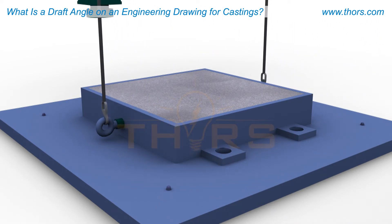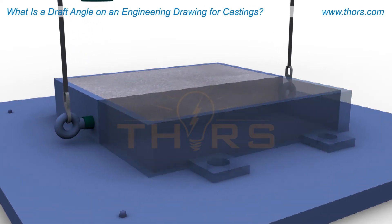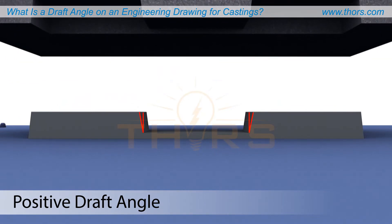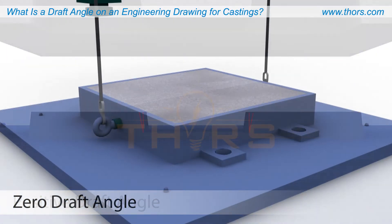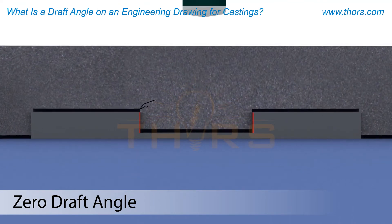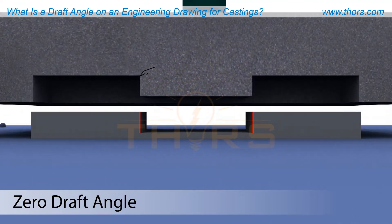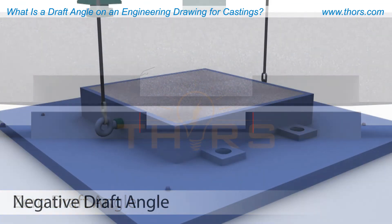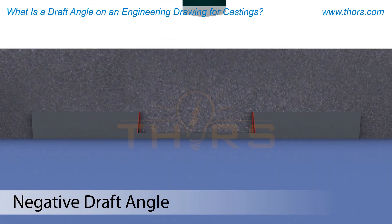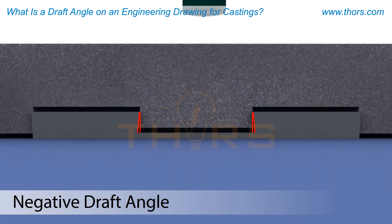There are three types of draft angles. Positive draft angles are necessary for the proper release of the tooling. Zero draft angles may result in molds or cores being cracked or broken when stripped from the tooling. Negative draft angles will not allow the tooling to be stripped. The particular manufacturing process influences the necessary draft angle degree.